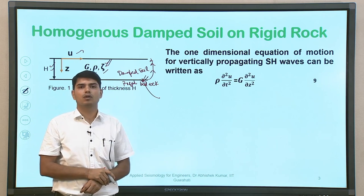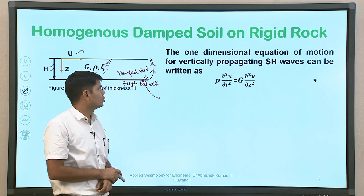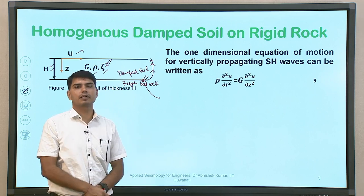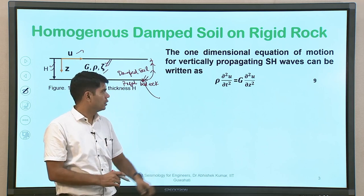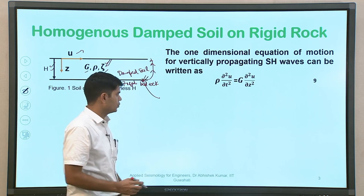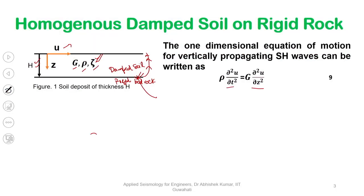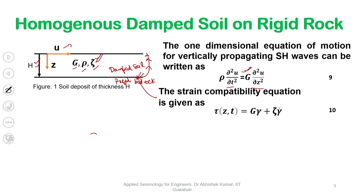The one-dimensional wave equation is: ρ ∂²u/∂t² = G ∂²u/∂z². We have already discussed this; displacement and shear stress values are solely dependent on shear modulus — this is the undamped equation. When we talk about damped soil, the total stress in the medium is a summation of the spring component (linearly proportional to loading) and the dashpot component (proportional to the rate of loading, dγ/dt). So the stress value is not only G·γ but also includes a damping component multiplied by dγ/dt.